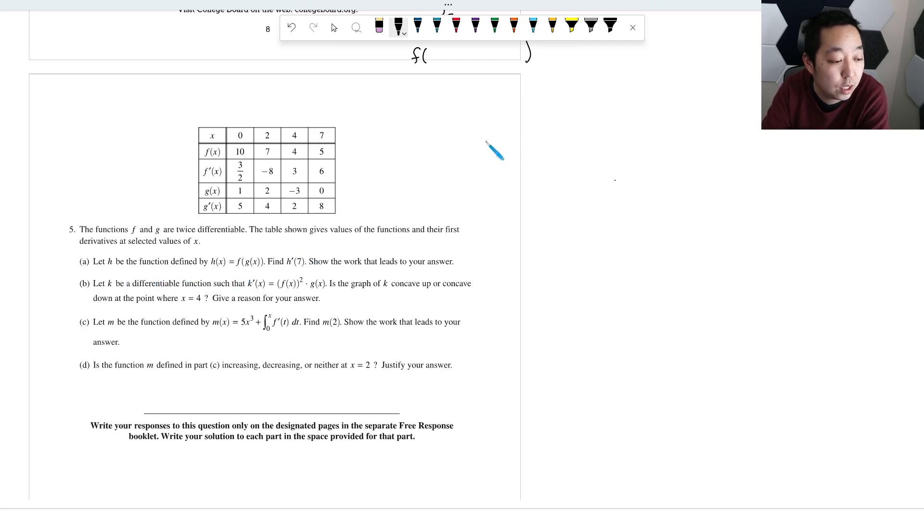Find h prime of 7 and show the work that leads to your answer. So h prime of x, we're just going to do derivative notation. We're going to do derivative of the outer function, f prime of g of x, leave the inside alone, and then by chain rule, we do g prime of x.